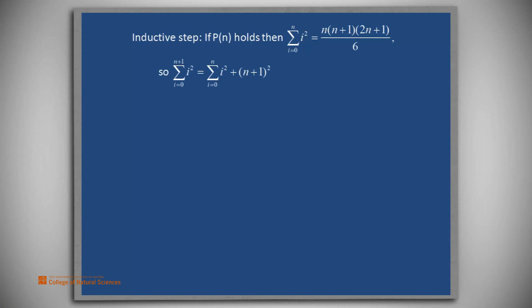First, we look at the summation on the left-hand side. We're trying to show that the summation from 0 to n+1 is equal to the right-hand side where n is replaced by n+1.